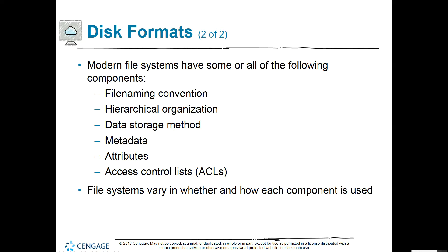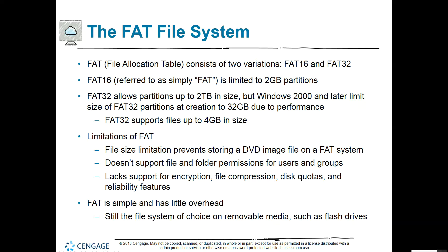FAT file systems include FAT16 — generally just called FAT — which is limited to 2 GB partitions, and FAT32, which can go up to 2 TB in size, though Windows 2000 and later limits FAT32 to 32 GB for performance reasons. FAT32 supports files up to 4 GB in size. The limitations of FAT include the file size limitation, no support for file and folder permissions for users and groups, and no support for encryption, file compression, disk quotas, or reliability features. FAT is simple with little overhead and is still the file system of choice on removable media like flash drives.